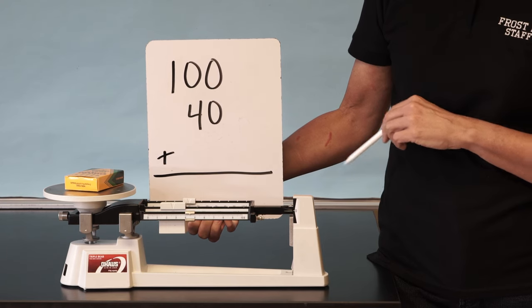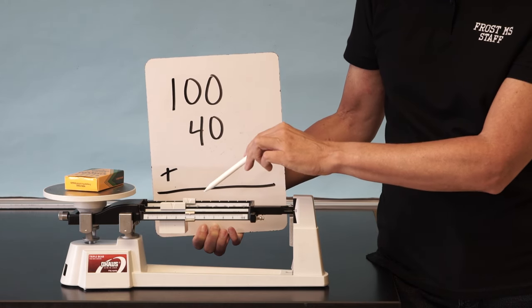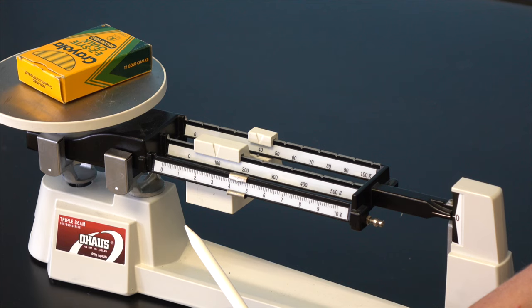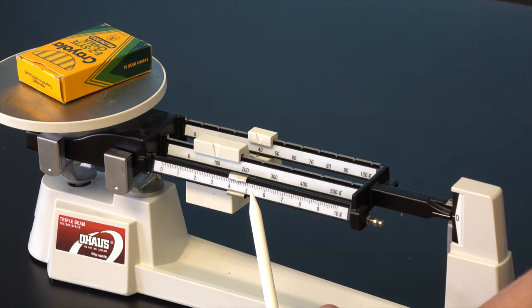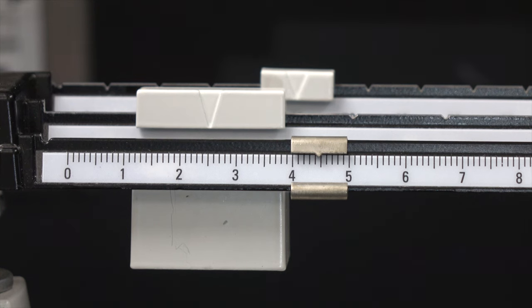That gives us 100 plus 40. And the reading on the front rider is between 4 and 5 grams. And since there are 10 small marks between the 4 and the 5, each of these small marks represents a tenth of a gram. And the pointer has passed the fourth of these smallest marks. So that makes the reading on the front beam 4.4.